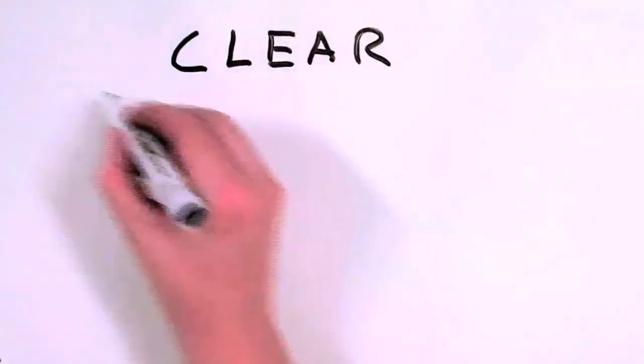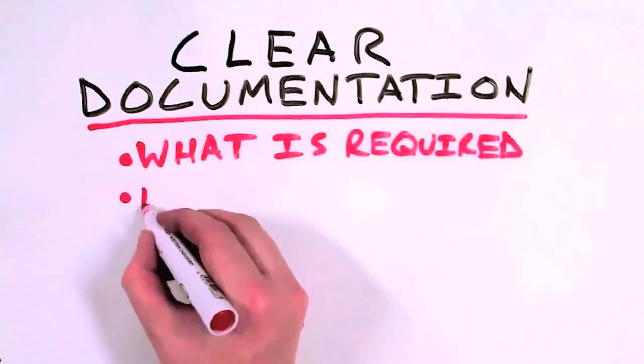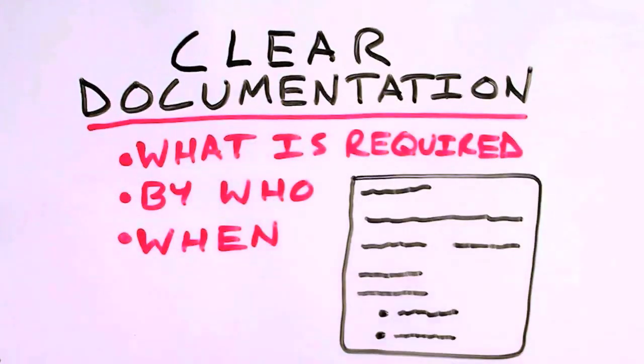At this level, there is also clear documentation of what is required, by who, when, as well as details on how this change will be implemented. And this essentially provides the last chance of behavioral change or performance change before escalation.